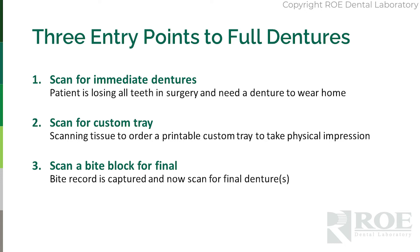The second entry point is to scan for custom trays. This is a way around scanning all of the muscle attachments and all of the landmarks that would arise from a dynamic impression used to stretch tissue. Rather than try to capture frenum and muscle attachments, we will scan for a custom tray. And the third is scanning a bite block — a traditional general dentistry bite block — but digitizing it in the office.